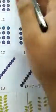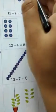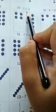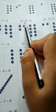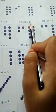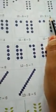Here we have 10. Now from 10, we will subtract 7, so it is equal to 3. From 10, we will subtract 8, so it is equal to 2. From 10, we will subtract 1, so it is equal to 1.